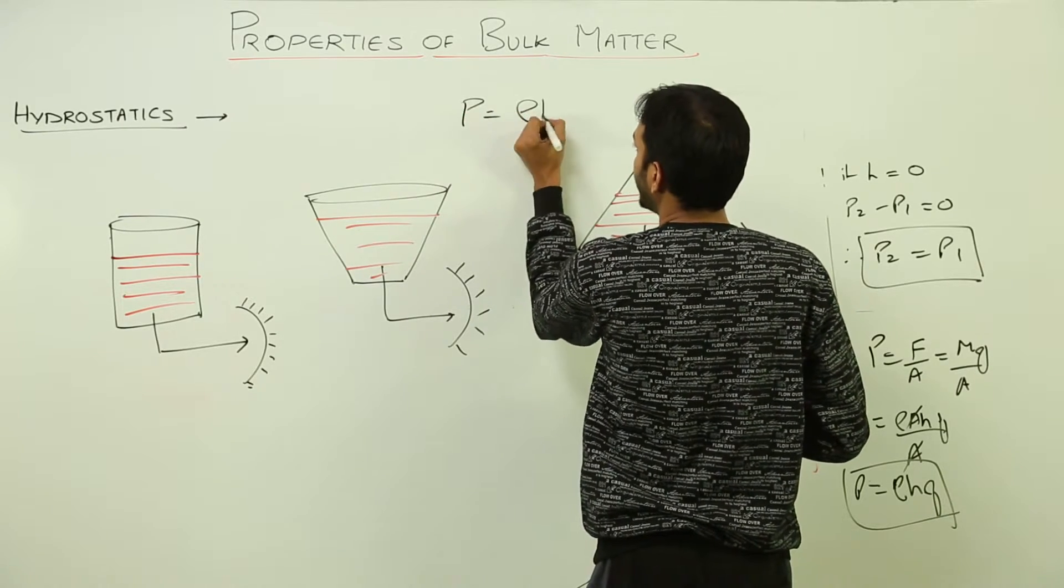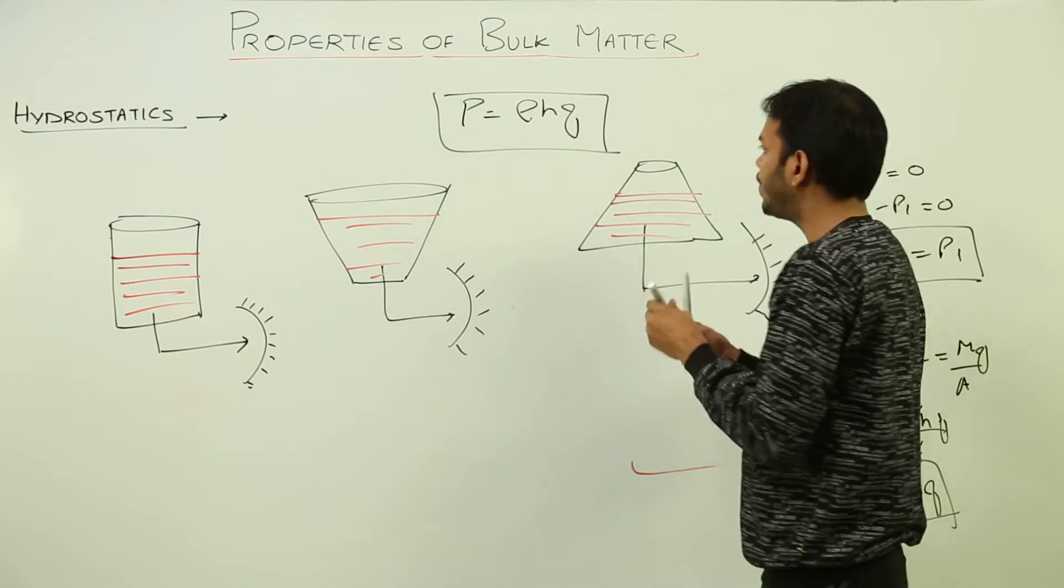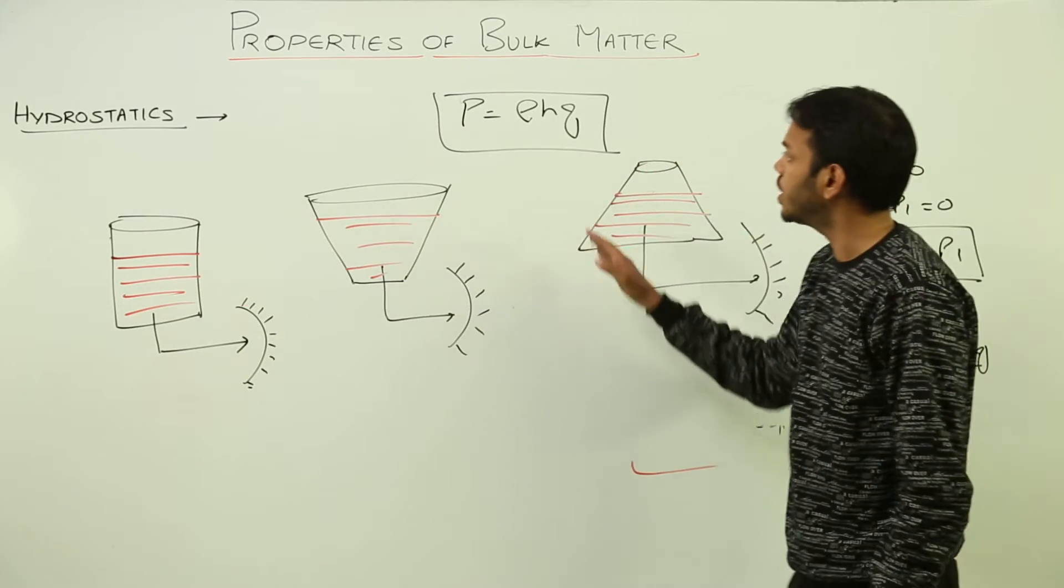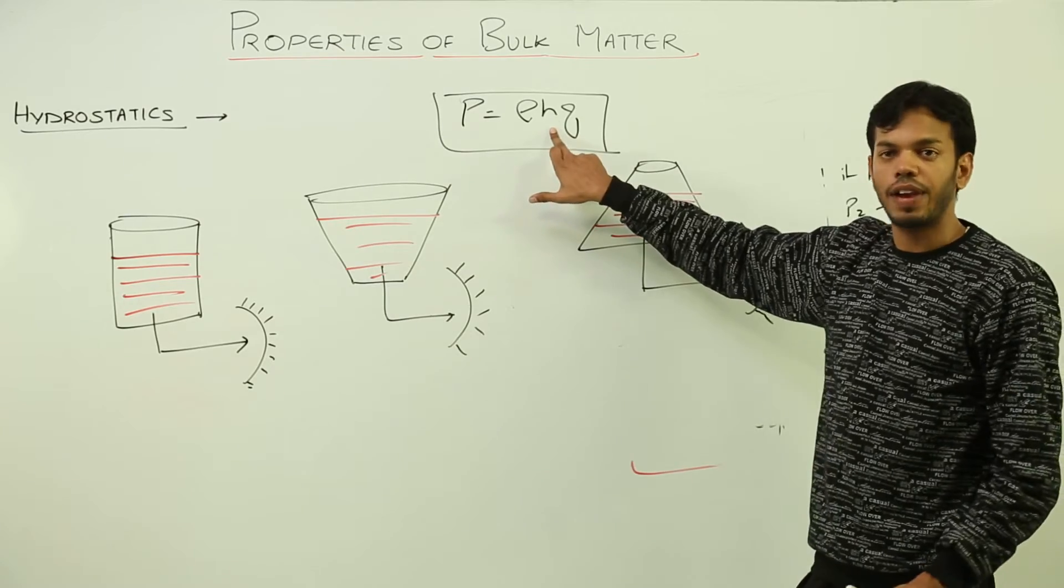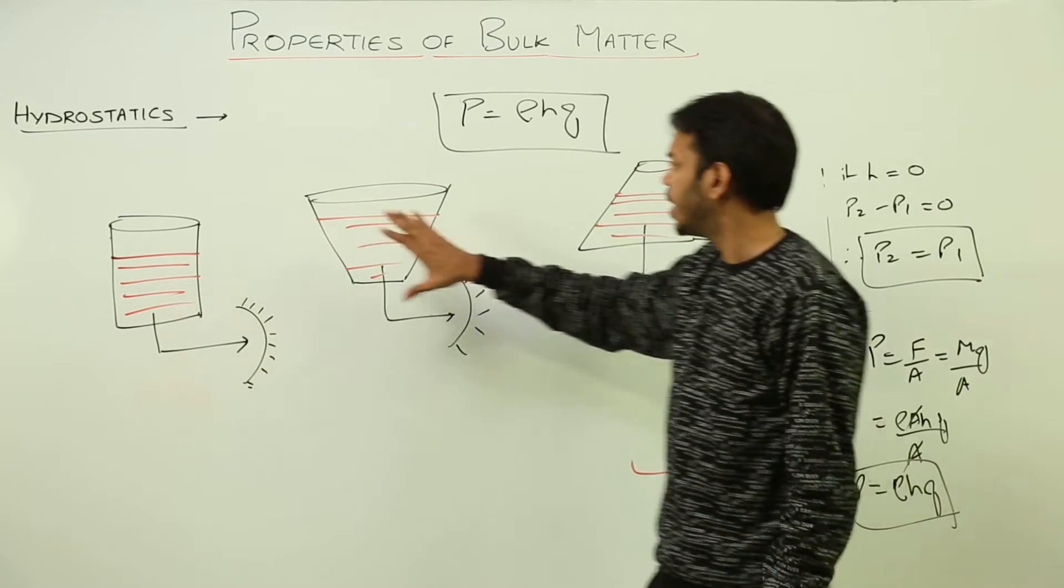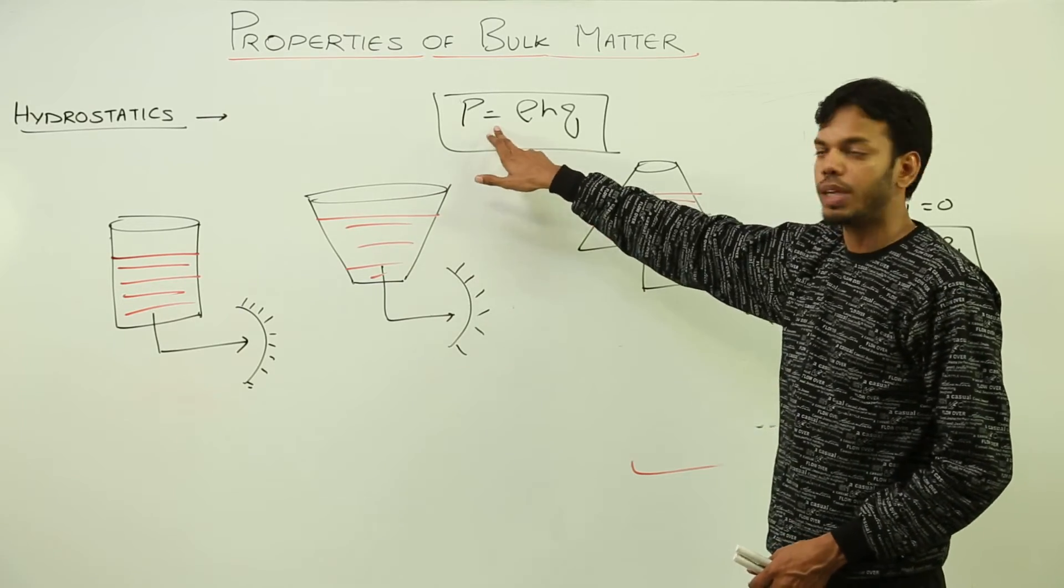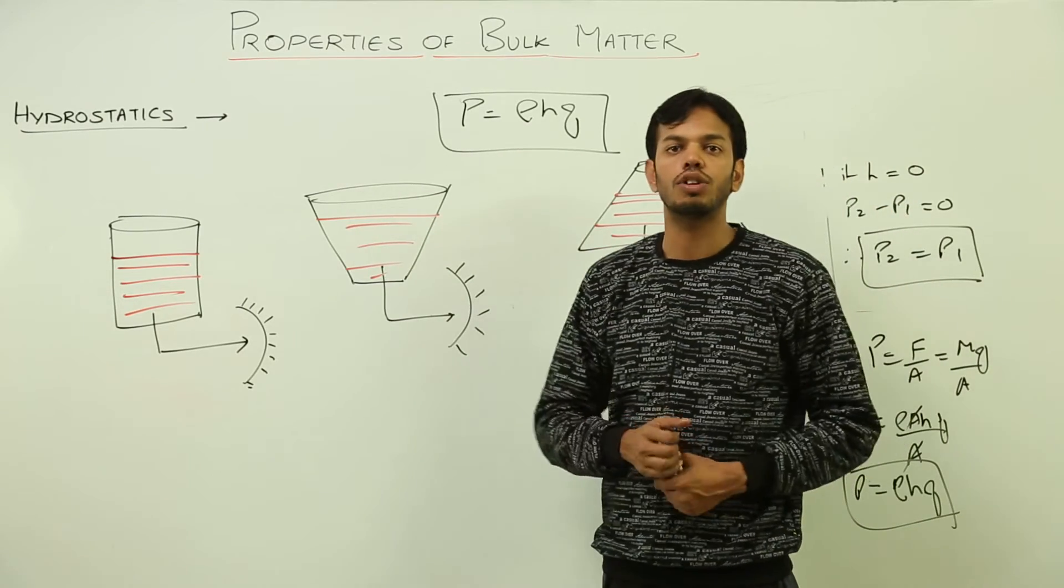Where if density and gravity are constants, that means if same liquid is chosen, h will be the deciding factor. And if they are taken at same height, that means if liquid is filled in these three containers up to same height, pressure is going to be equal. This concept is called hydrostatic paradox.